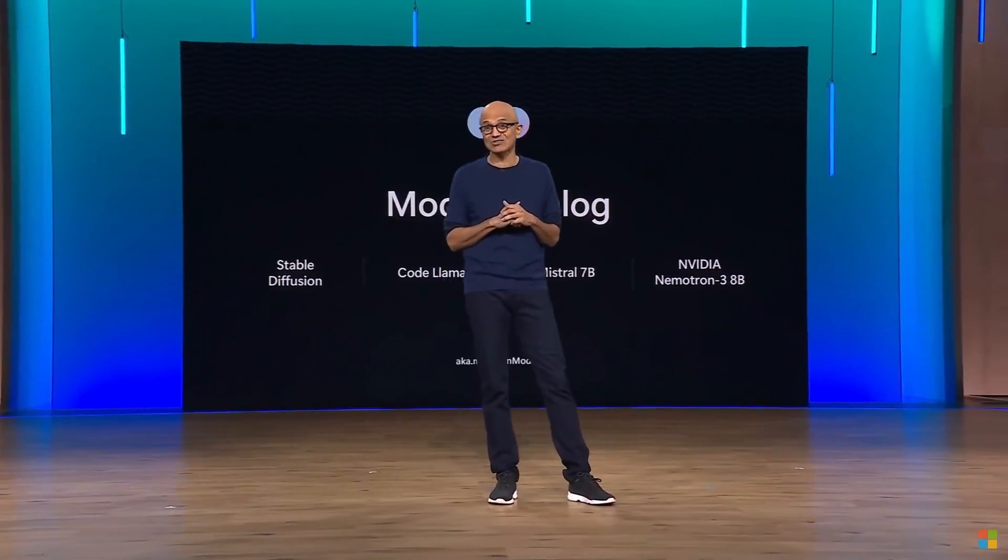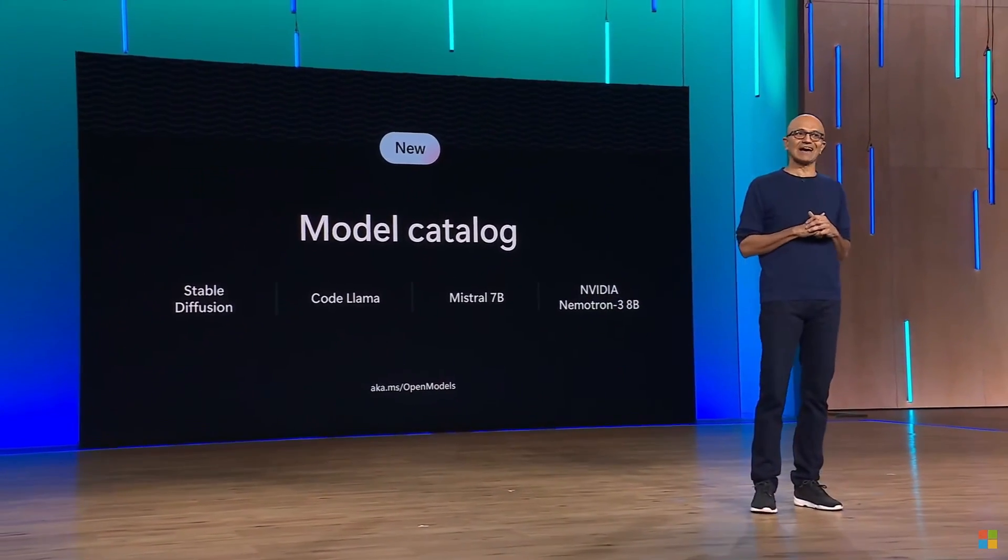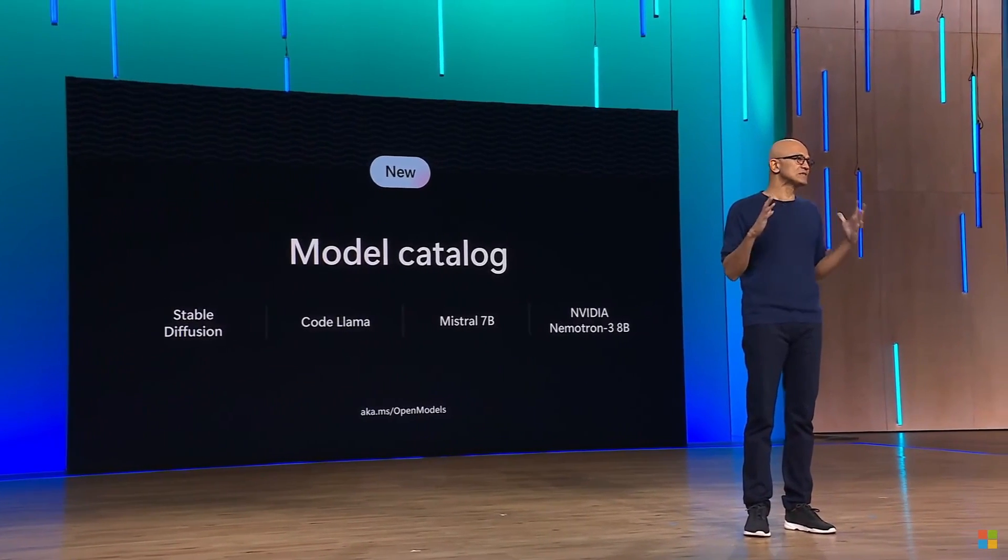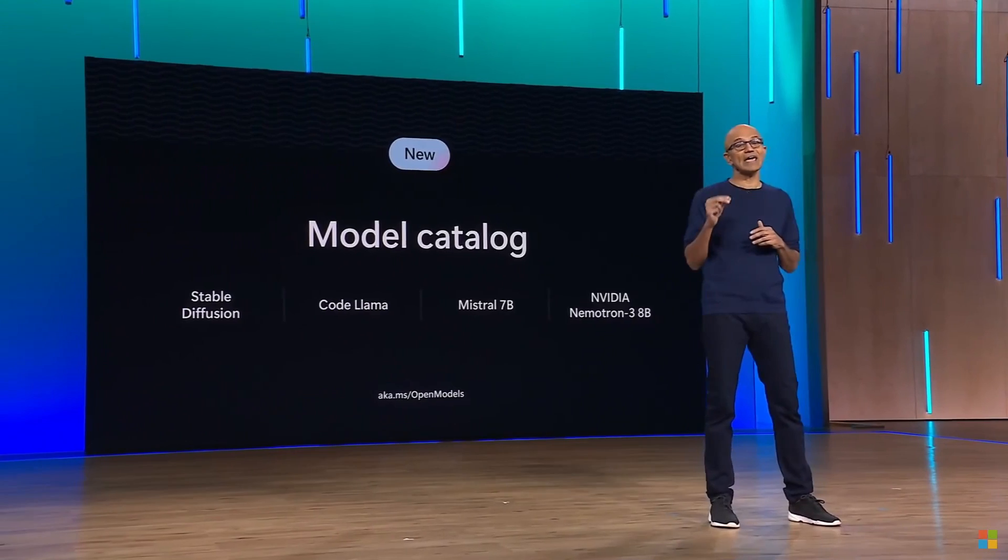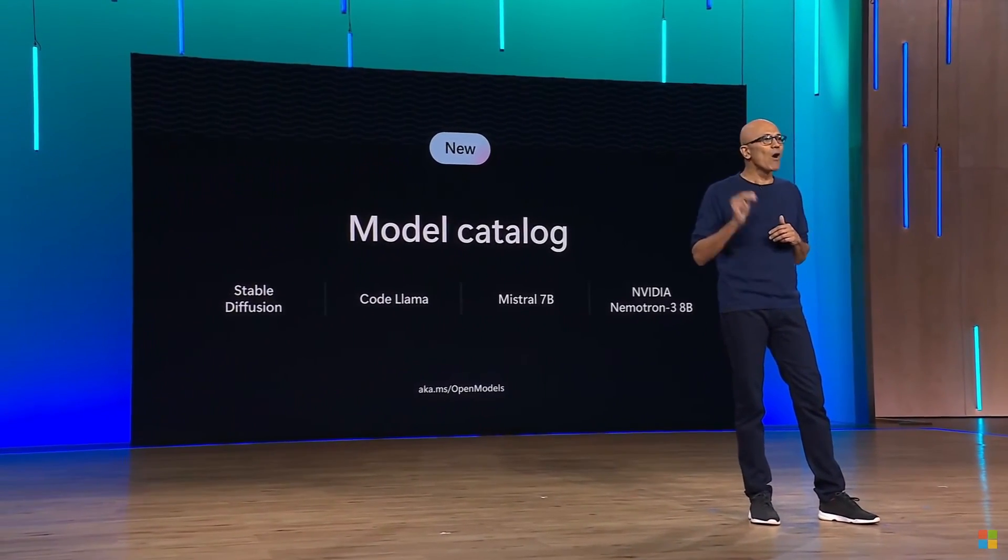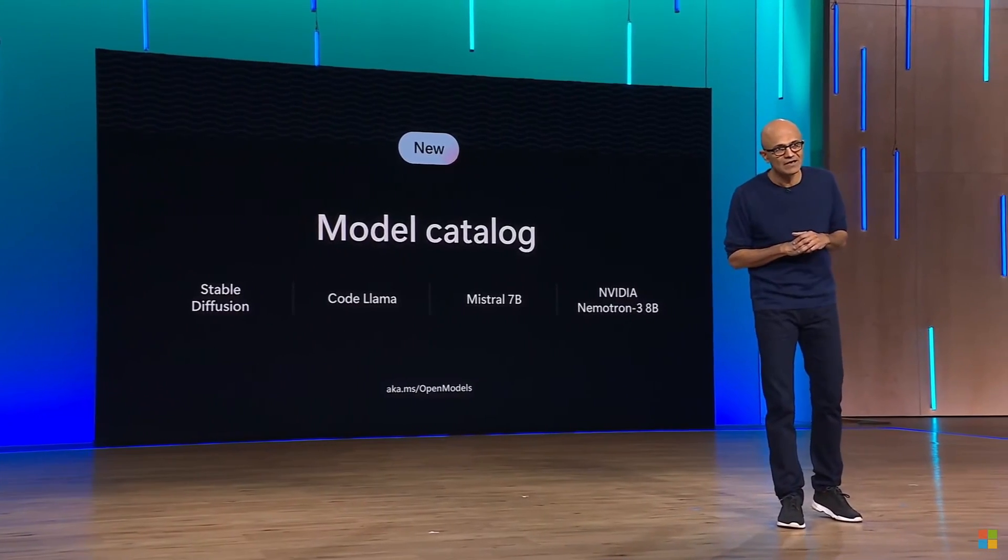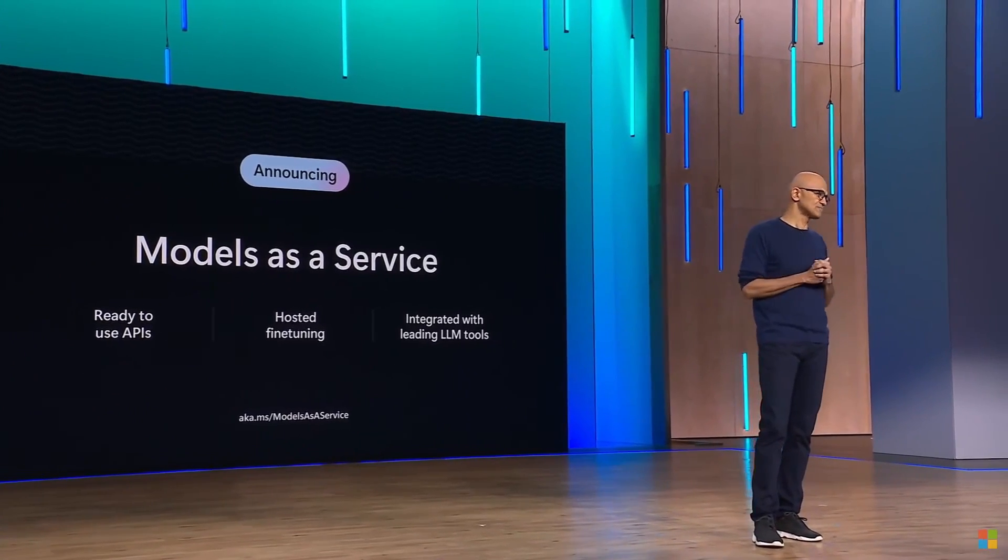Phi-2 is Microsoft's smallest language model and you can access it with Microsoft Azure right now. With new benchmarks from the company, it shows that it beats Google's Gemini Nano model as well as Mistral's 7 billion parameter model. They announced this 2.7 billion parameter language model that demonstrates outstanding reasoning and language understanding capabilities. It showcases state-of-the-art performance compared amongst different types of large language models with less than 13 billion parameters.